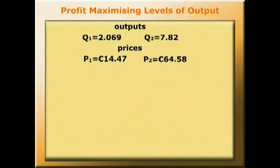So we're charging a much higher price in the market where good 2 is being produced than we're charging in the market where good 1 is being produced.